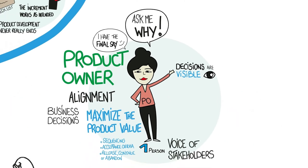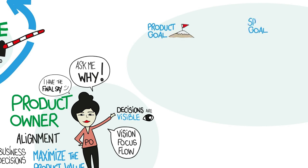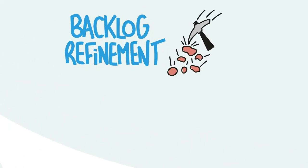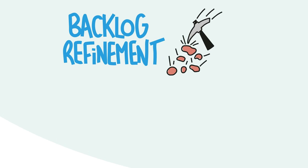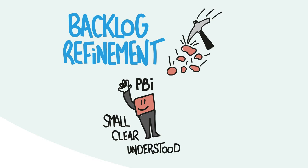Traditionally, the product owner's mission has been summarized in three words: vision, focus, and flow. Scrum represents these concepts through the product goal, the sprint goal, and backlog refinement. Backlog refinement is the process of making the most important backlog items transparent, visible, understood, and small.